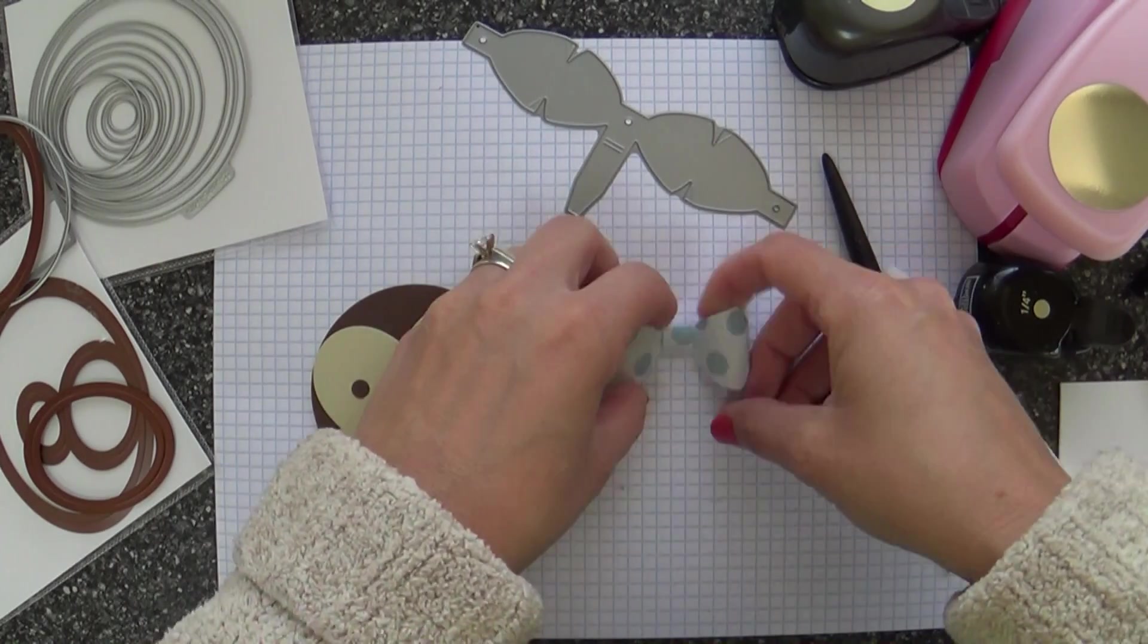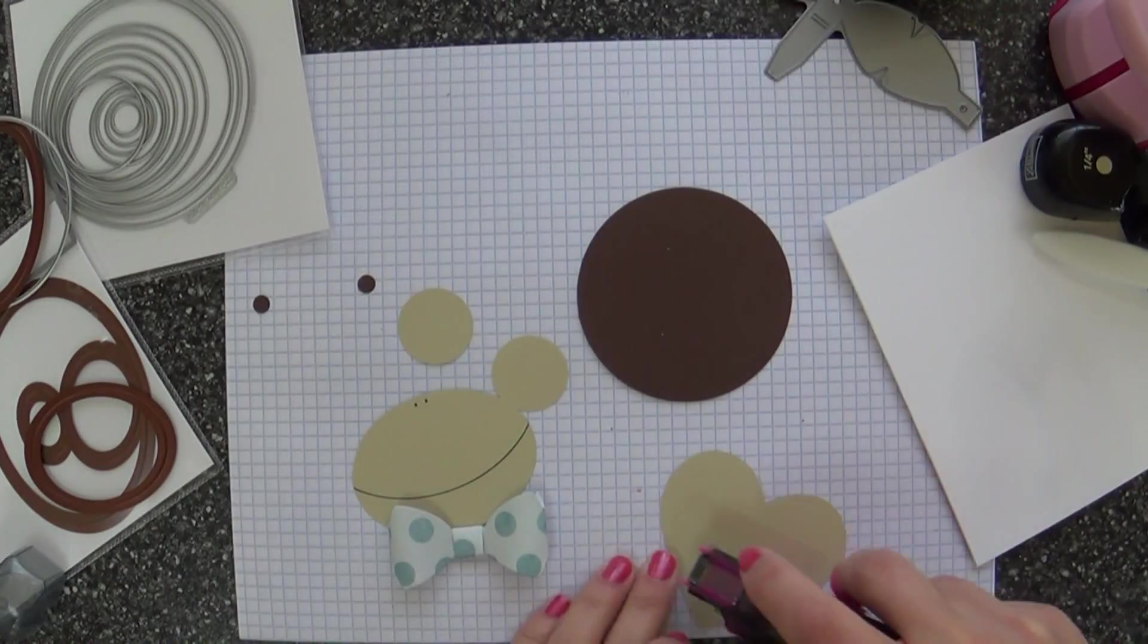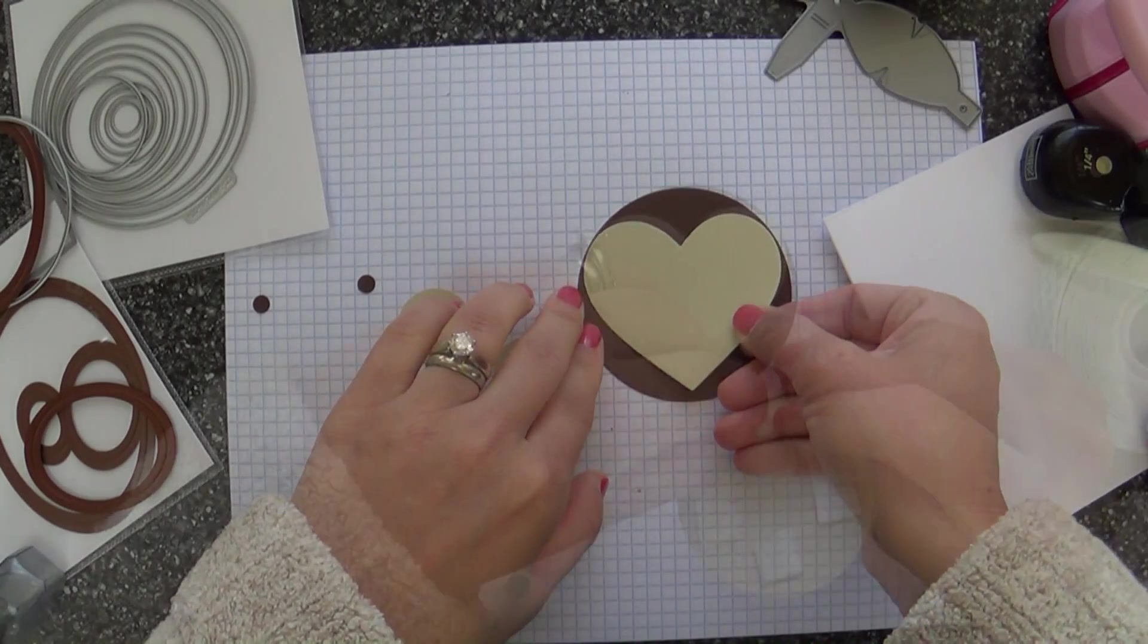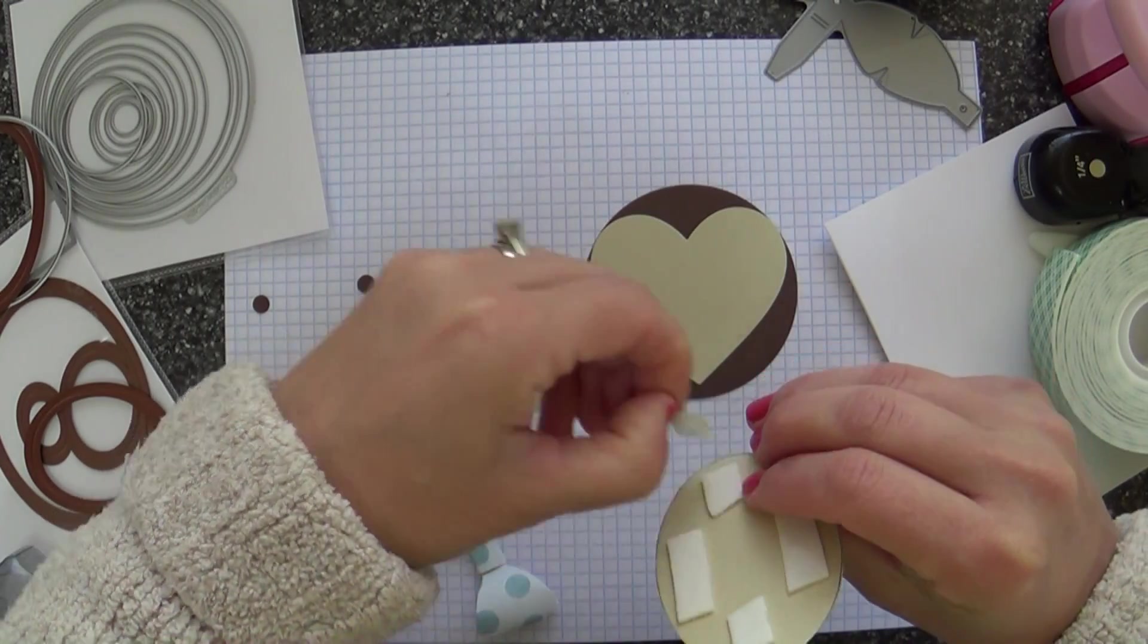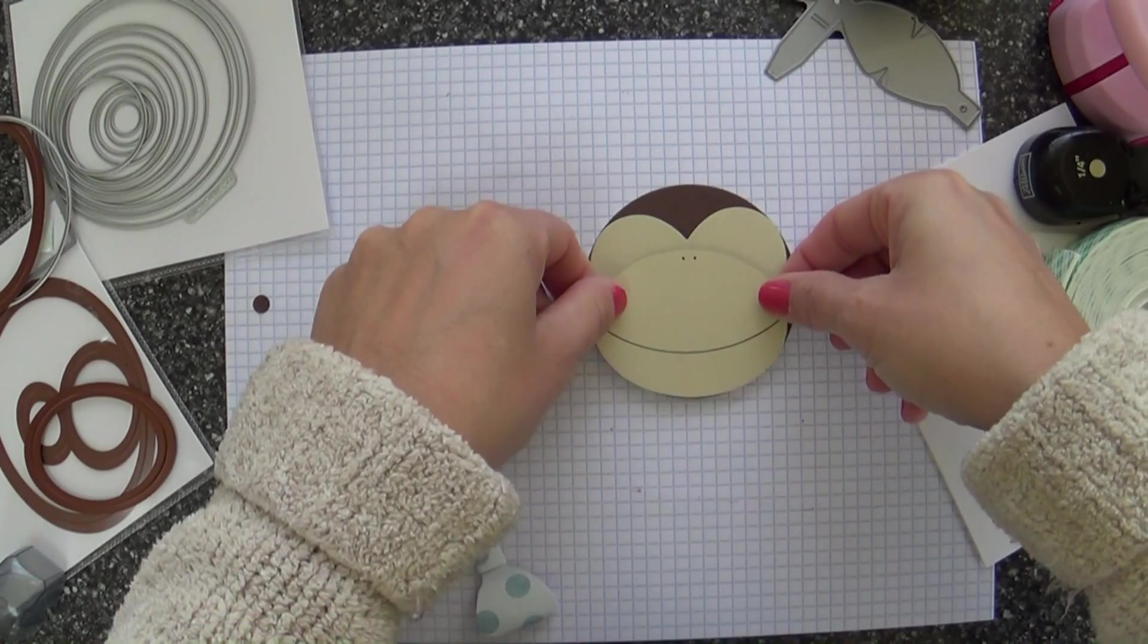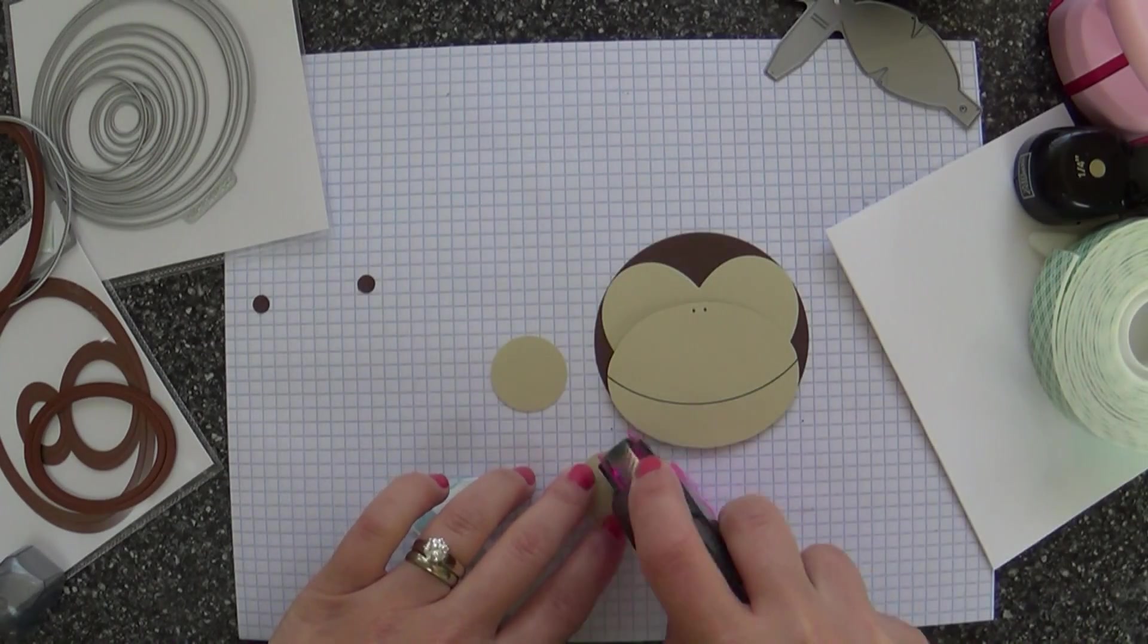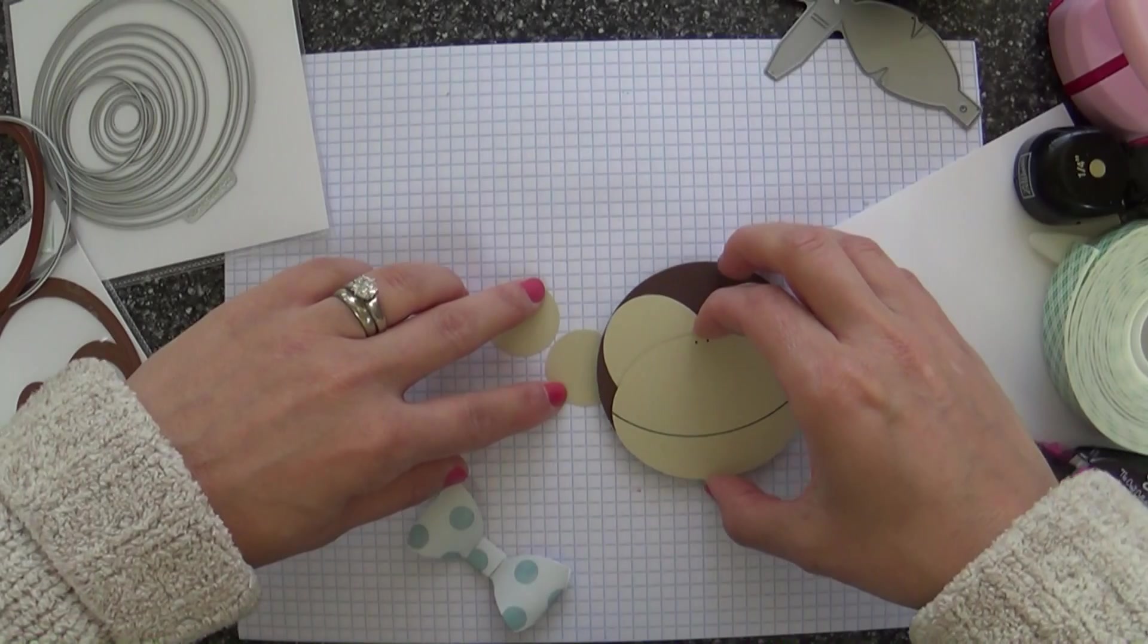And the cool thing about these bows is they're nice and puffy, but they can also go flat for mailing. So they're like 3D. They can go flat and they can puff up. So now I'm just adhering my monkey together. Really simple. Just running some adhesive behind. I'm going to pop up the monkey mouth because that looked kind of cool to give them a little dimension and just tape the ears behind the head.